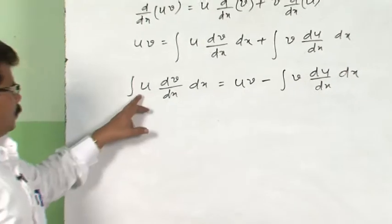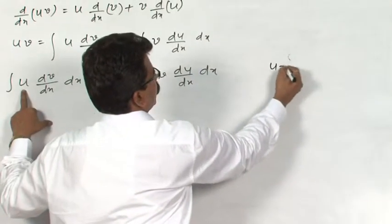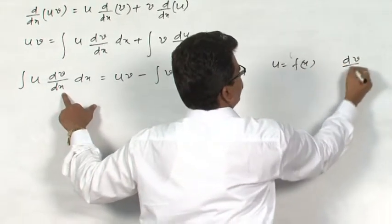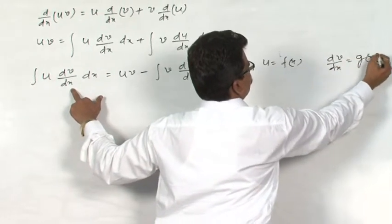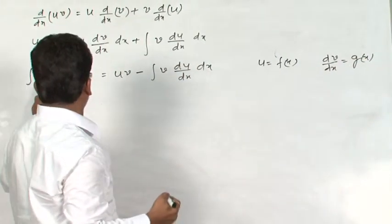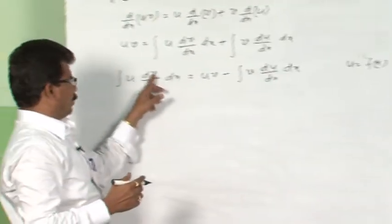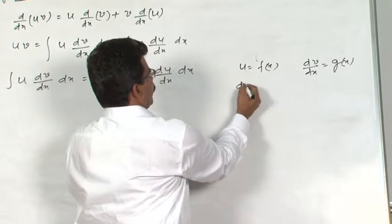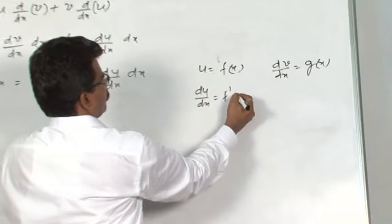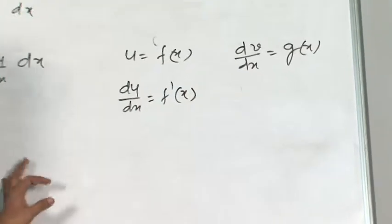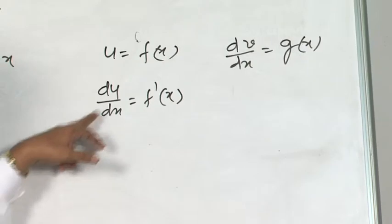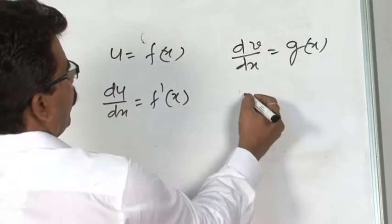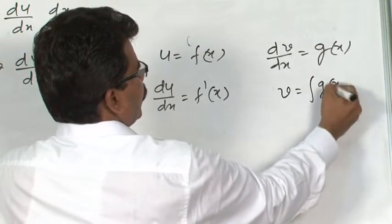Now I will assume u = f(x) and dv/dx = g(x). If you differentiate, du/dx = f′(x). And if you integrate dv/dx = g(x) on both sides, you will get v = ∫g(x)dx.